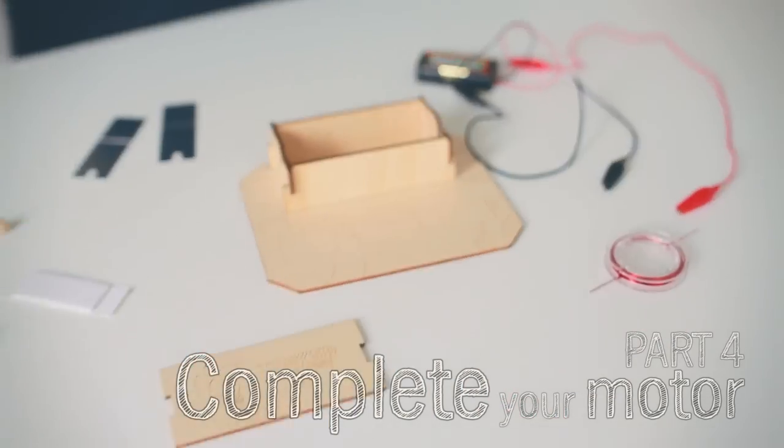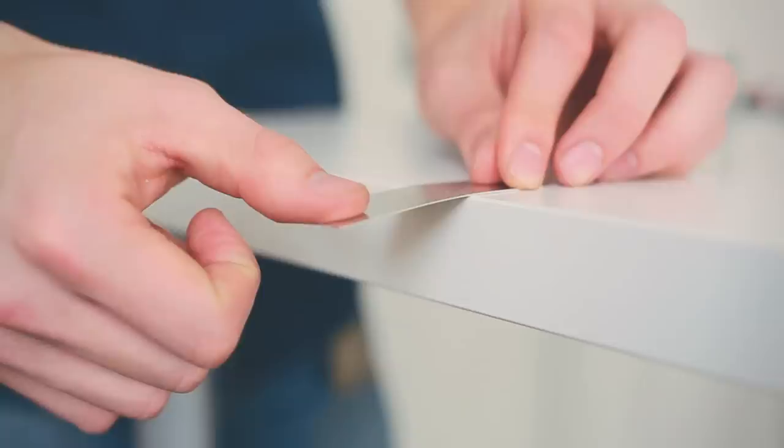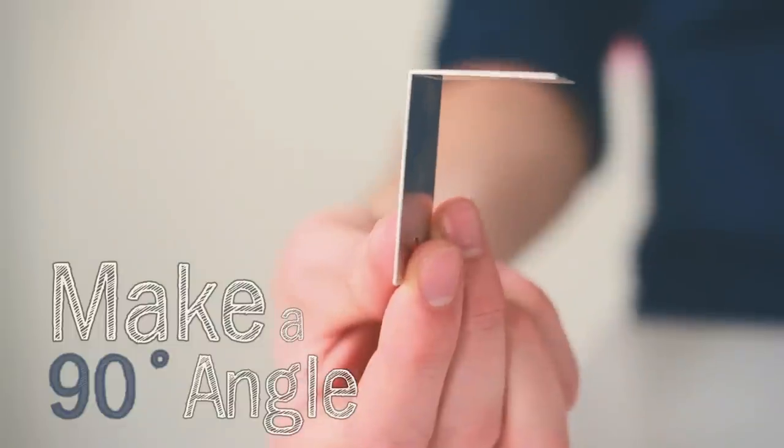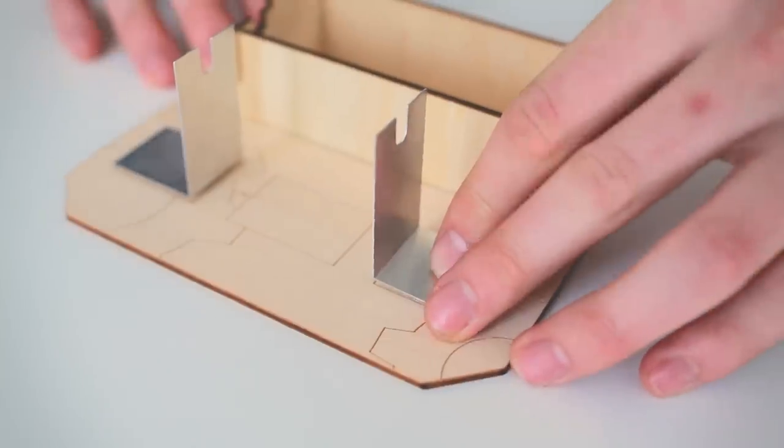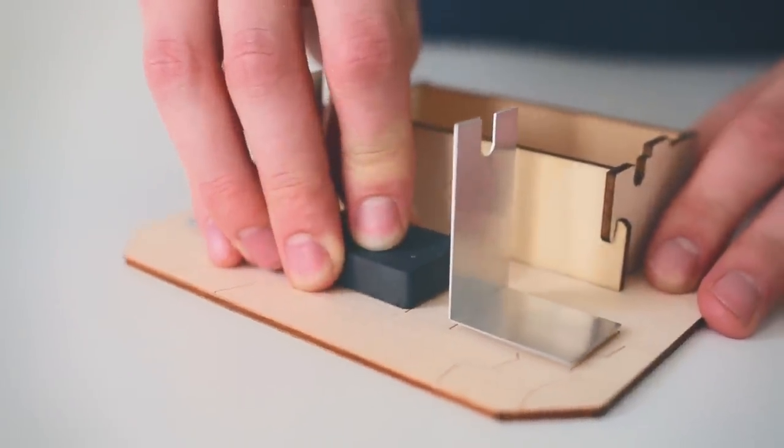And now it's time to put everything together. Take one of your aluminum plates, line up the score mark with the edge of the table. Then press down one side so that you make a 90 degree angle. And then use your sticky foam to attach the two plates to your base. Make sure the notches are facing up. Use sticky foam to attach your magnet to the center rectangle.